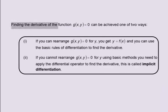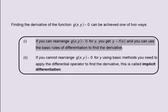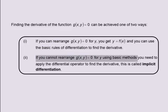Finding the derivative of the function g of x and y equals zero can be achieved one of two ways. First, if you rearrange g of x and y equals zero for y, you get y equals f of x and you can use the basic rules of differentiation to find the derivative. Second, if you cannot rearrange g of x and y equals zero for y using basic methods, you need to apply the differential operator to find the derivative. This is called implicit differentiation.